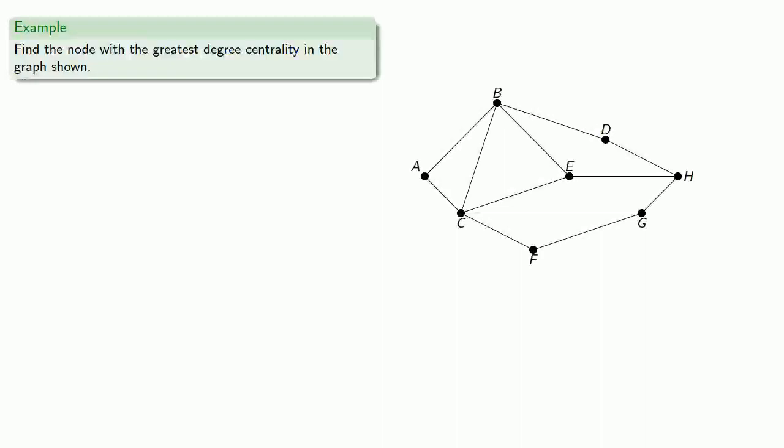So we might have a graph that looks like this. And we can find the node with the greatest degree centrality in the graph. So we measure the degree of every node. So A has two edges coming into it. So A has degree 2.